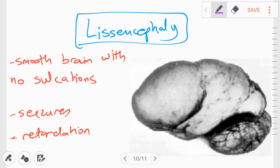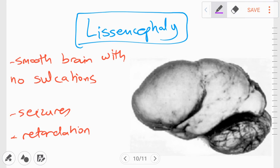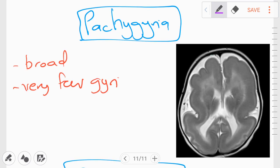Next is something called lissencephaly. What we see is smooth brain with no sulcations. So normally where there are supposed to be sulcations in the brain, we have just a smooth surface. This can result in seizures and it can even progress to developmental retardation.